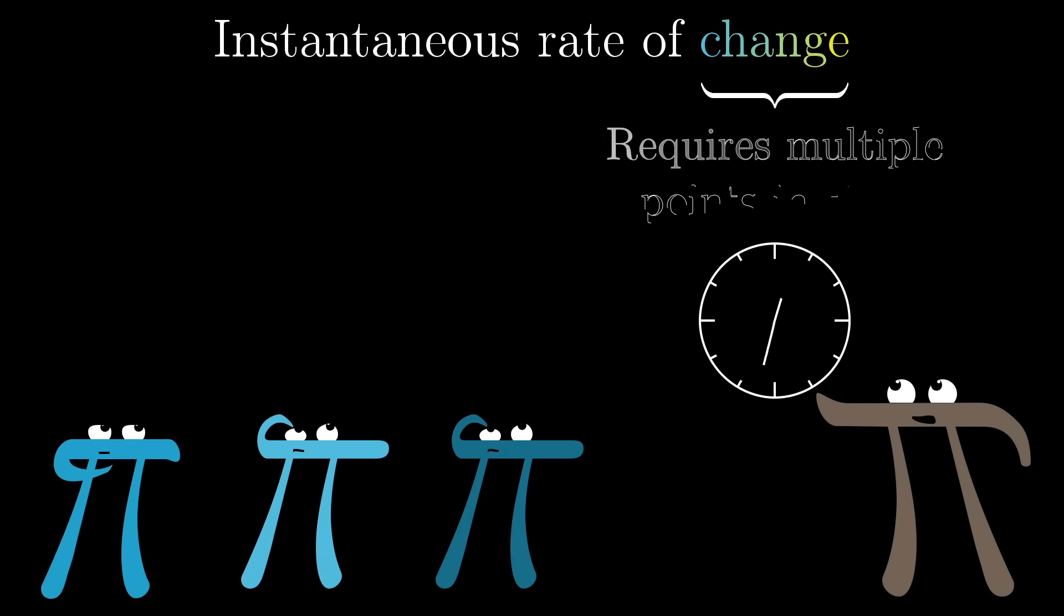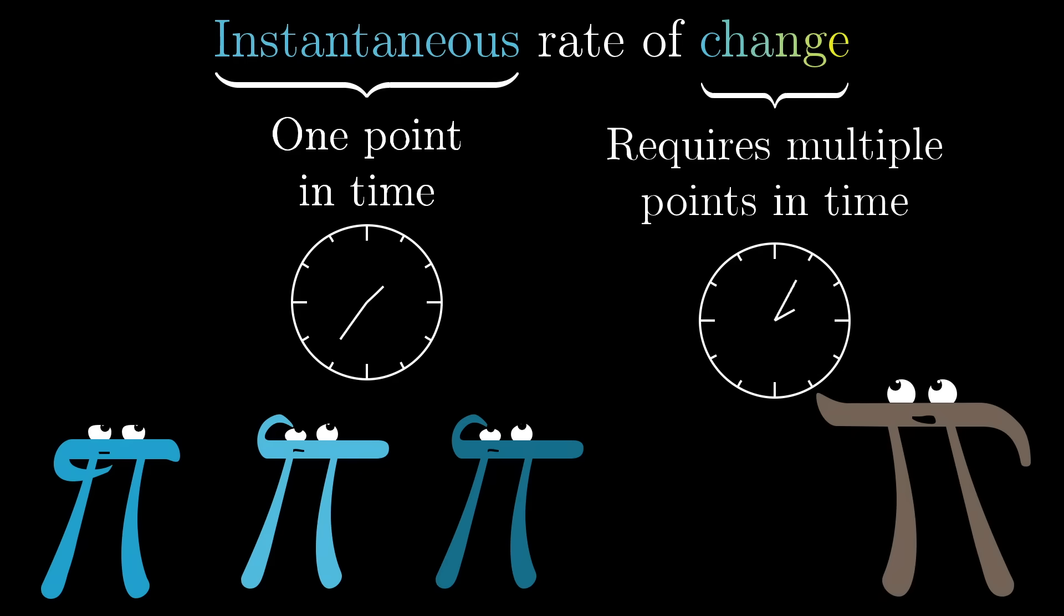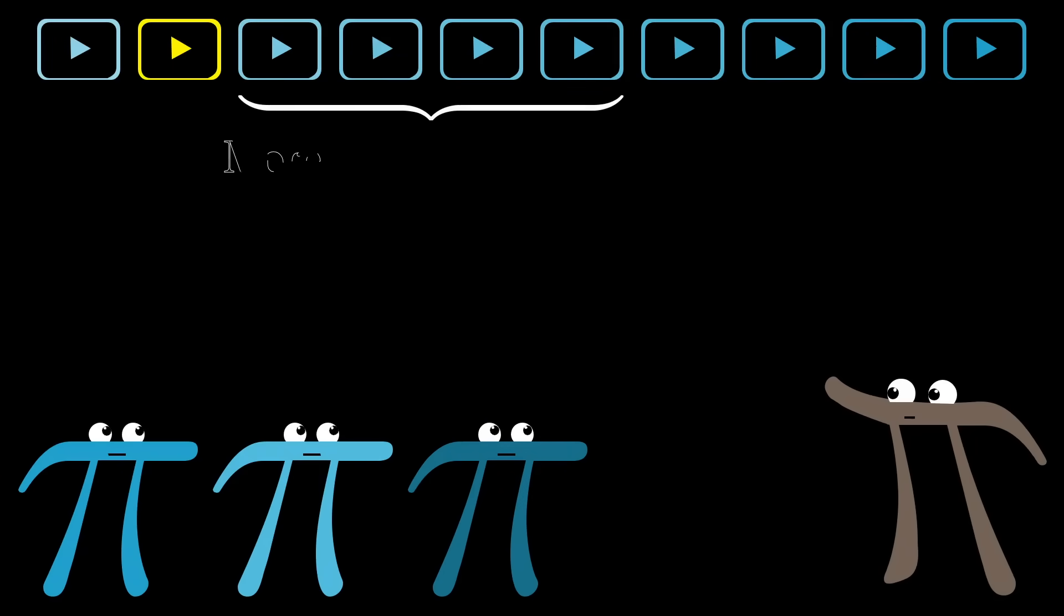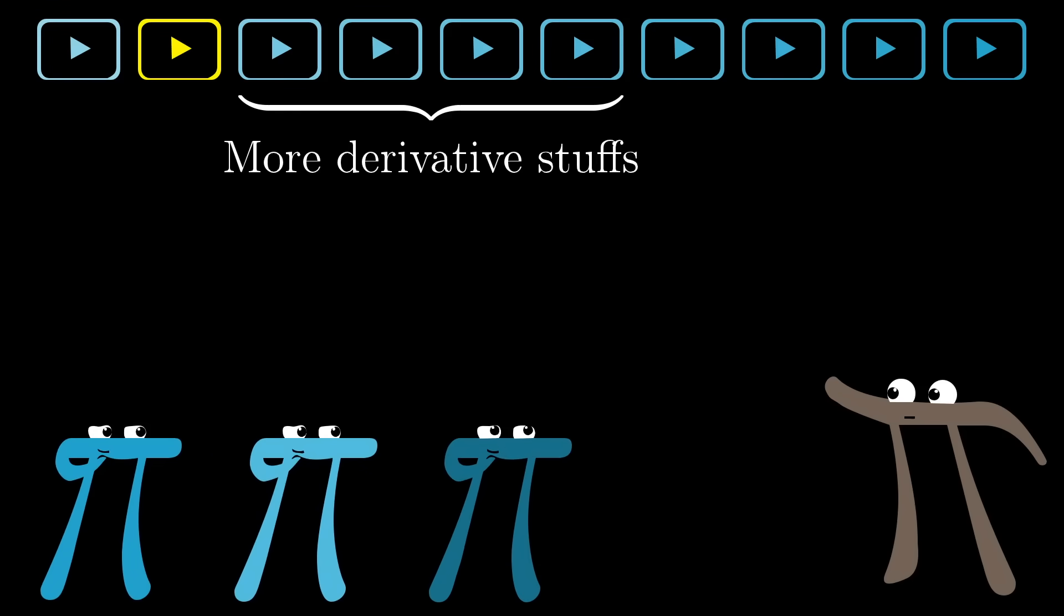So whenever you hear people refer to the derivative as an instantaneous rate of change, a phrase which is intrinsically oxymoronic, I want you to think of that as a conceptual shorthand for the best constant approximation for rate of change. In the next couple of videos, I'll be talking more about the derivative, what it looks like in different contexts, how do you actually compute it, why is it useful, things like that, focusing on visual intuition as always.